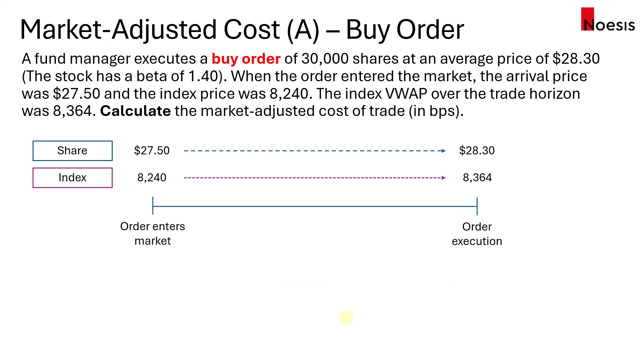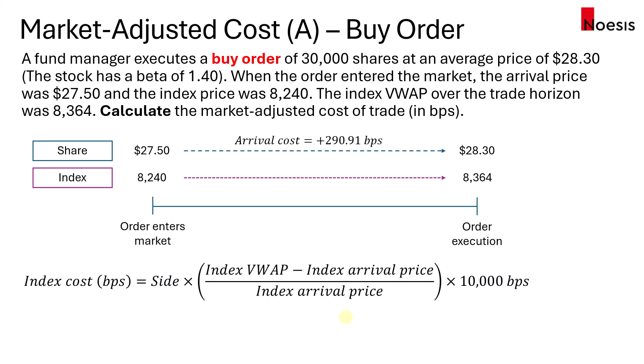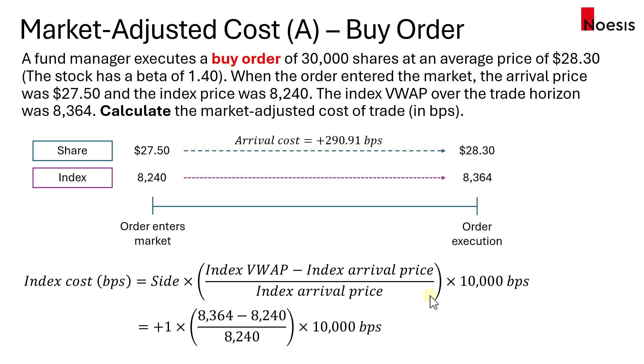Now, what about the index cost? The index cost would also use the side, multiplied by the index VWAP minus the index arrival price, over the index arrival price, multiplied by 10,000 basis points. We're trying to measure the index cost using the same alignment as the share, if you compare this with the arrival cost. Substituting the numbers in, we get 150.49 basis points.